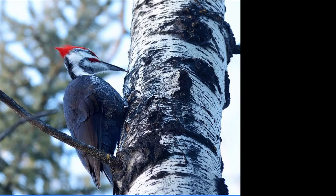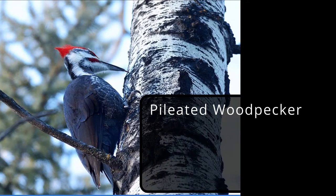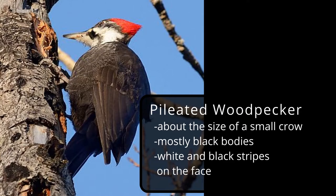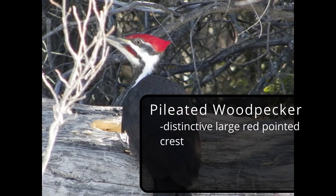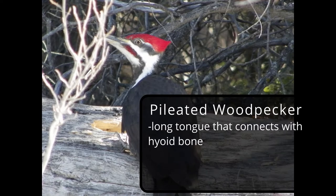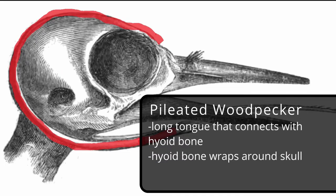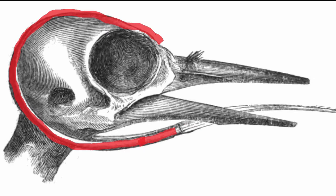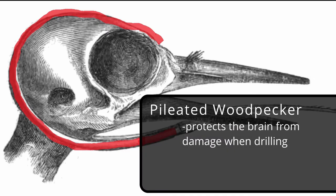And then we have the largest — the pileated woodpecker. They're about the size of a small crow. They have mostly black bodies with white and black stripes on the face that continue down their neck. They can be easily recognized by the large red pointed crest on the top of their head. Males also have a red cheek stripe. Lastly, they have a really long tongue that meets with a bone at the base of their beak. That bone then splits into two and wraps around on the top of their skull, meeting back up with the top of their beak. It kind of acts like a seat belt for the brain, but we'll learn more about that in the next video.